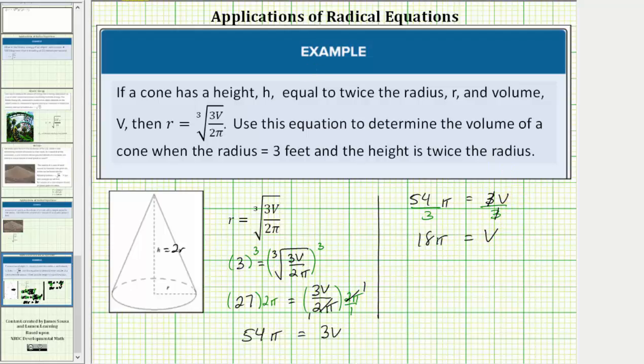So now we know the exact volume of the cone, v, is equal to 18 pi and the units would be cubic feet.